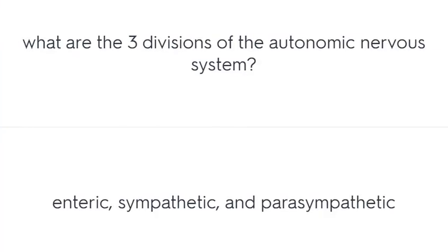What are the three divisions of the autonomic nervous system? Enteric, sympathetic, and parasympathetic.